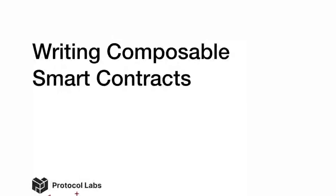We built all of this mechanism up so that we can write reliable, composable smart contracts. Here's where we get to the payoff. This last section is kind of the punchline of the whole talk. So how do we use all of this infrastructure to write smart contracts that are more reliable, more understandable, and especially more composable?